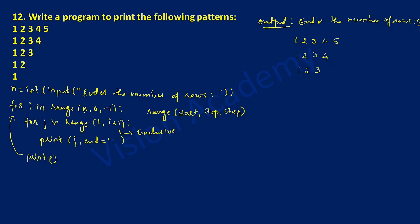Control transfers to the outer for loop again, decrementing i by 1 — now i is 2, because 3 minus 1 is 2. The inner for loop j in range starts from 1, and 2 plus 1 is 3 which is exclusive, giving 1 and 2. So j prints 1, then increments to 2, and stops at 2. Then the print statement executes and the cursor comes down to the next line.